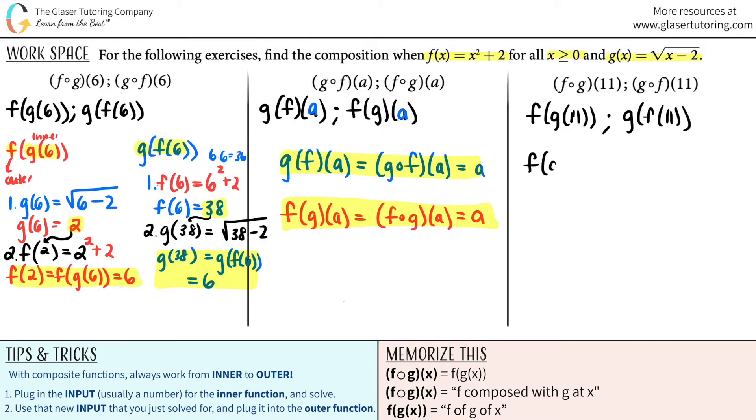So for the first part, f of g of 11, what do you think? Well, that equals f of g at 11 and that equals, you got it, 11. There you go. We did all the hard work in the beginning and then we just make that connection. And now let's just do it again for the other one. G of f of 11, which is the same thing as g composed with f at 11 would be equal to 11. And there you go.